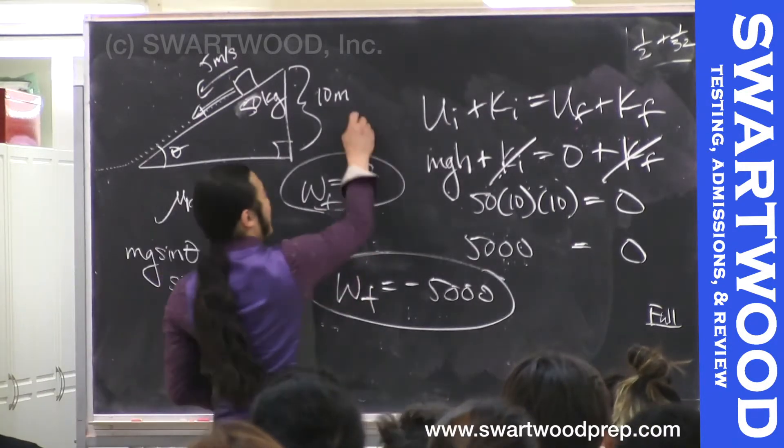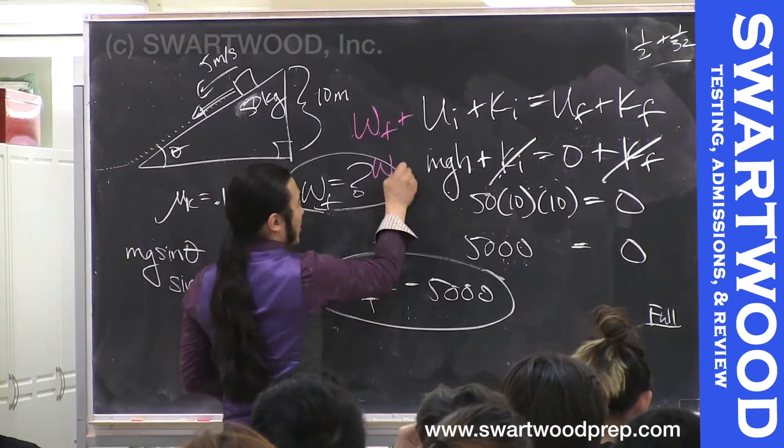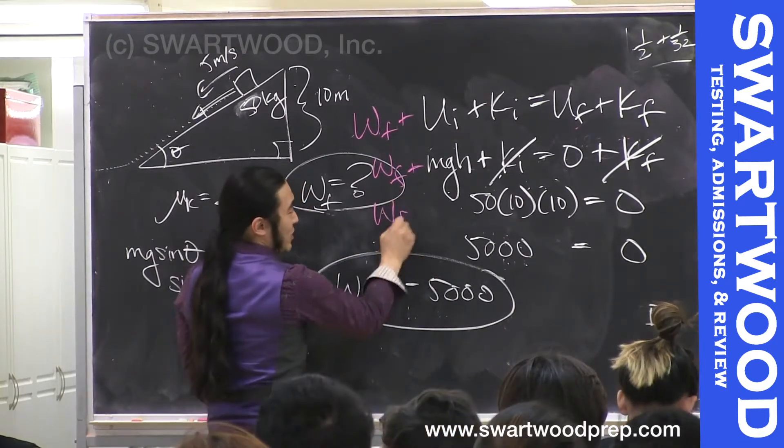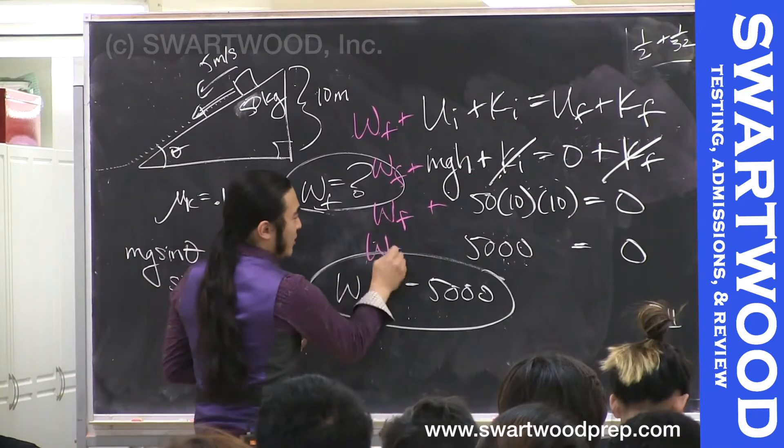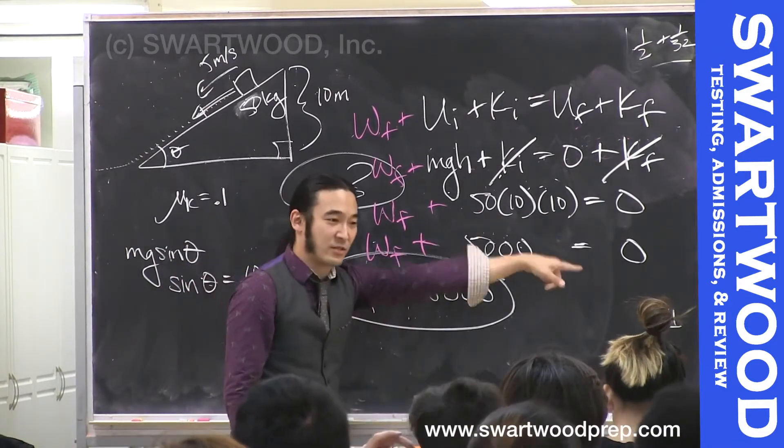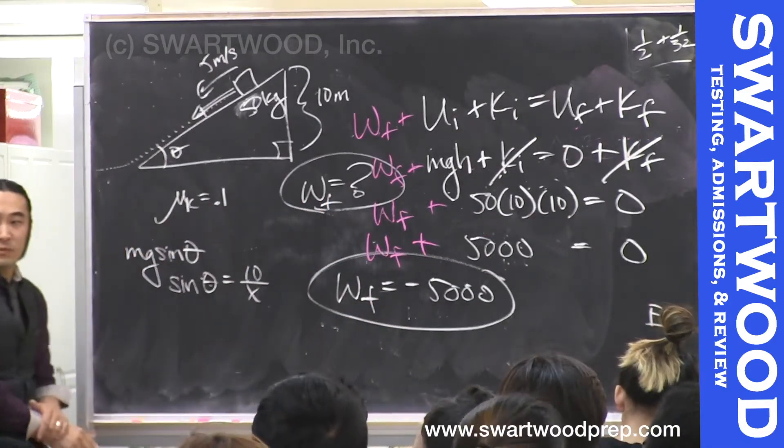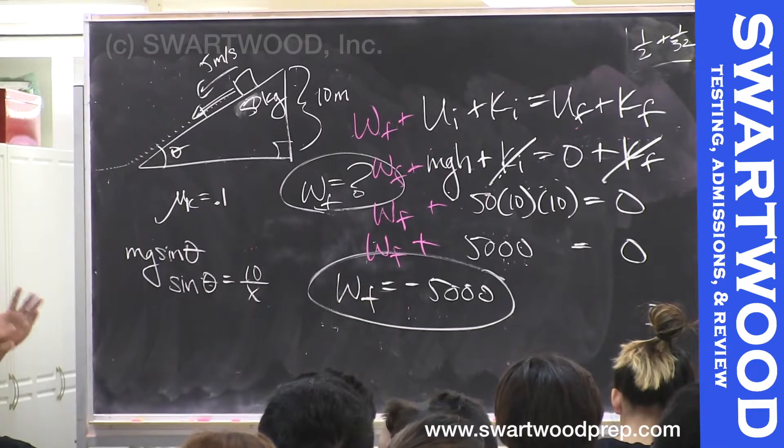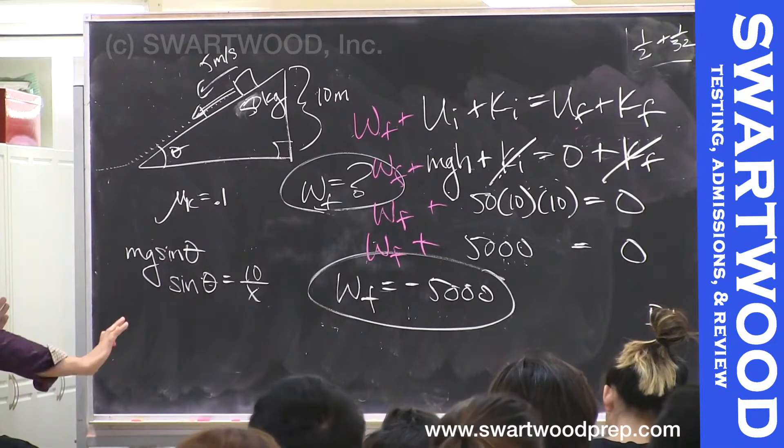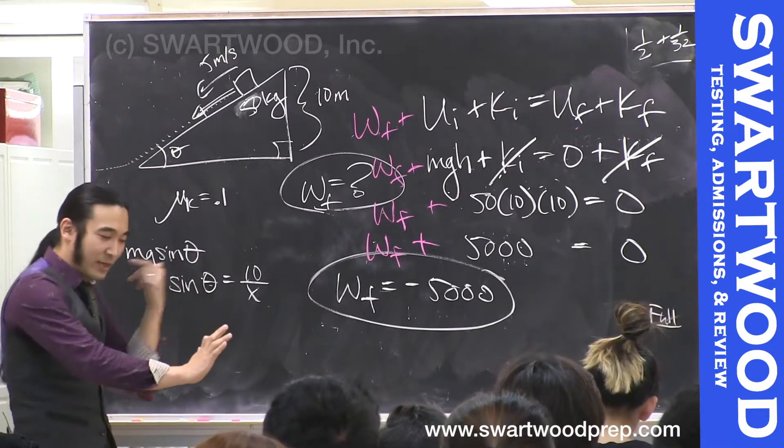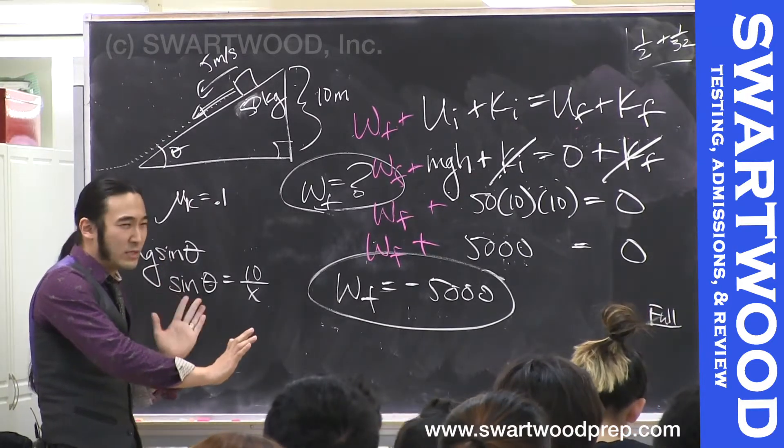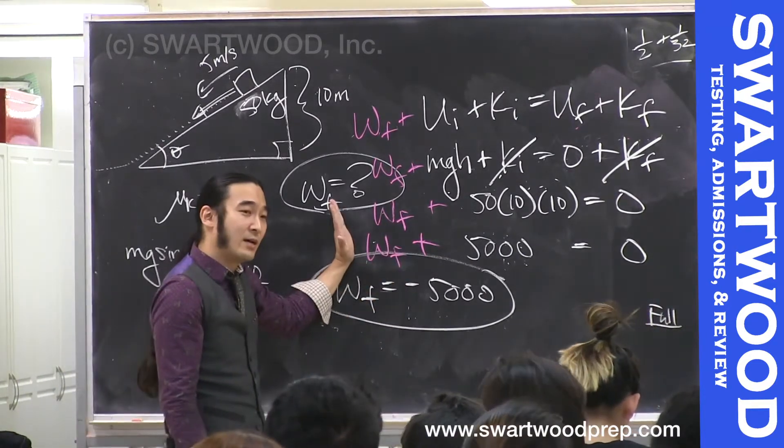If that really bugs you, you can put in work done by friction, and you can bring the 5,000 to the other side and it's negative 5,000. Mathematically you can actually put the work done by friction on the right-hand side, and we can explain that, but you'd have to think about it. I think intuitively it's always easier to put the friction on the left-hand side, and that way the sign will always be negative.